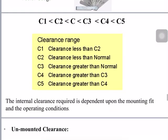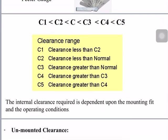Which clearance to use depends upon the mounting fit and the operating conditions. For machining operations — lathe, drilling, or milling machines — accuracy must be maintained within tolerance, so more stiffness and rigidity is required. This means lesser clearance is needed, so C1 and C2 clearances are generally used for machine spindle applications. For higher clearance applications such as vibrating screens and exotic gearboxes, C4 clearance is used. If the machine operates in a higher temperature zone, you can go for C5 clearance.